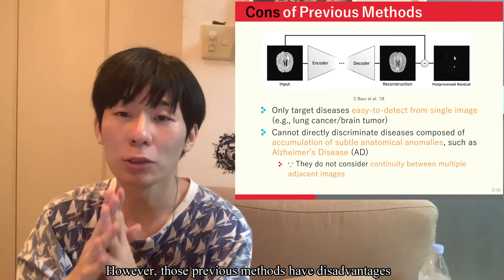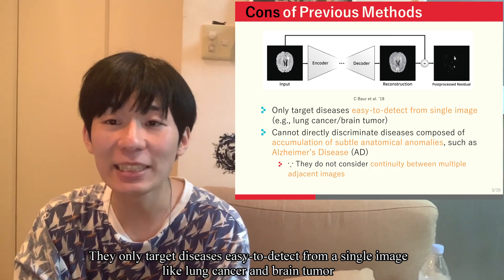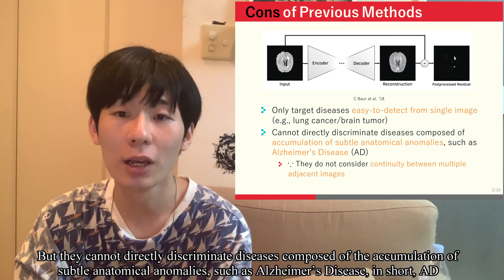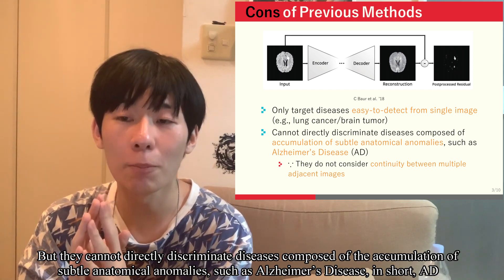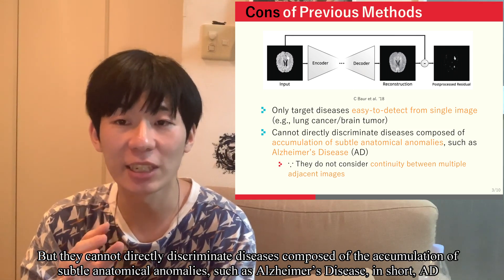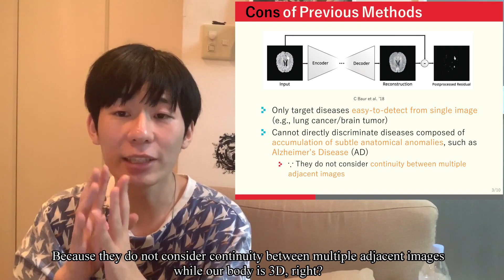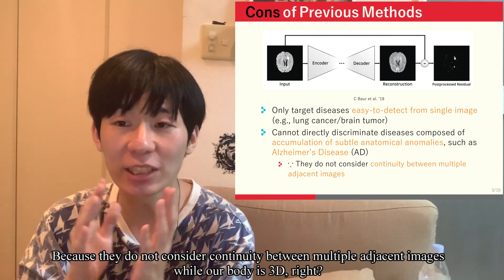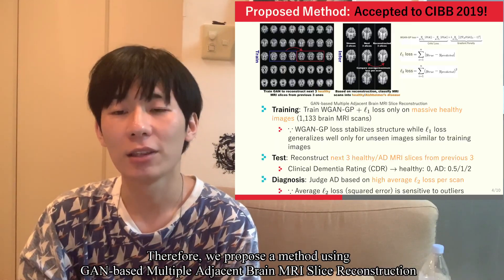However, those previous methods have disadvantages. They only target diseases easy to detect from a single image, like lung cancer and brain tumor. But they cannot directly discriminate diseases composed of the accumulation of subtle anatomical anomalies, such as Alzheimer's disease — in short, AD — because they do not consider continuity between multiple adjacent images, while our body is 3D.